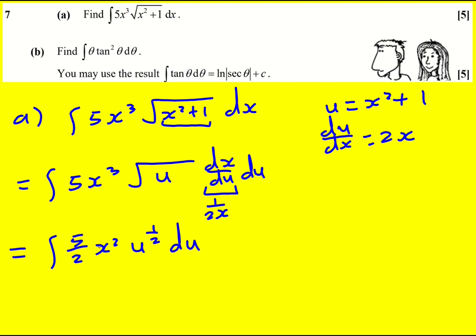I can't do anything with this yet because I've still got x's and u's but what I can do now, and this is the reason this has worked really well, I can now just replace x squared by u minus 1. I'm not going to get any awkward square roots or anything.